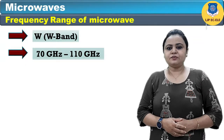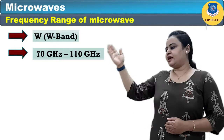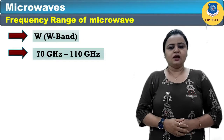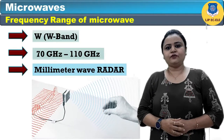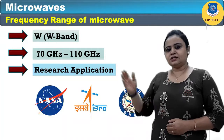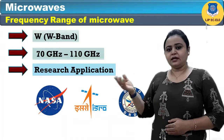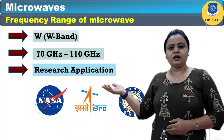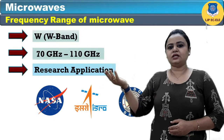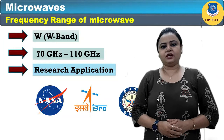The W band ranges from 75 to 110 GHz and is useful in millimeter wave radar research applications. Organizations like ISRO, DRDO, and NASA use this band of frequency for research.